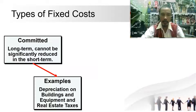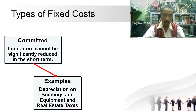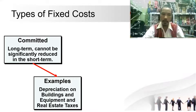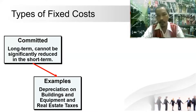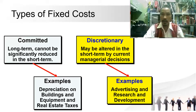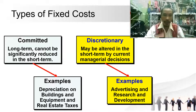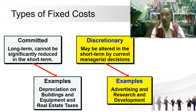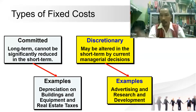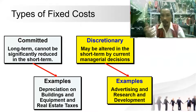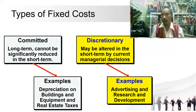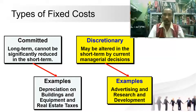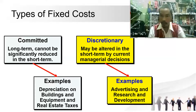Types of fixed cost: committed fixed costs are long-term and cannot be significantly reduced in the short term — for example, depreciation on buildings and equipment, and real estate taxes. Discretionary fixed costs may be altered in the short term by current managerial decisions. Managers use accounting reports to decide on these costs, such as advertising costs and research and development costs.